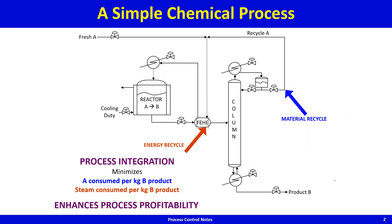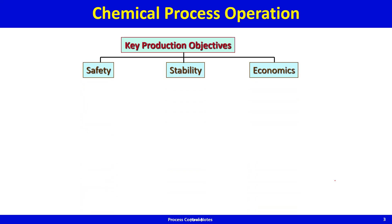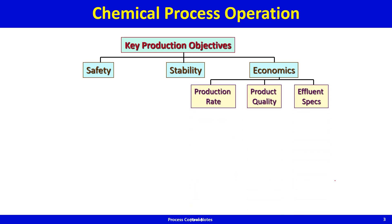We have a non-linear process with potentially severe dynamic interaction between the various units due to material and energy recycle. Such a process must be operated in a safe, stable manner, and it should also make sufficient profit — that is why the plant is there. Economic objectives are typically reflected in terms of production rate, quality guaranteed to the customer, effluent specifications, carbon credits, and so on.